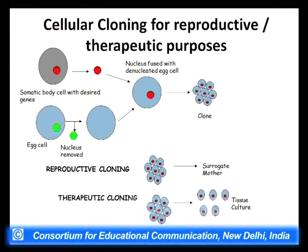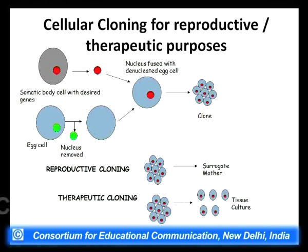After molecular cloning comes cellular cloning. In cellular cloning, we take a somatic body cell — which has a diploid number of chromosomes, 2n. We take an egg cell, remove the nucleus from it, and then put the nucleus of the somatic body cell into this enucleated egg cell. This diploid cell is put into a surrogate mother, and many different clones of the same cell are formed. All cells formed will resemble the somatic body cell from which the nucleus came.